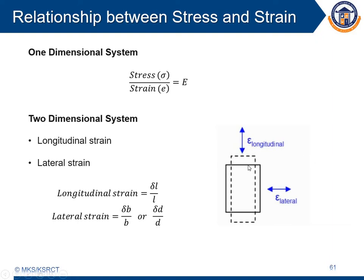Let us assume a rectangular component in which we are going to apply a tensile load, that is the pulling load. Because of the pulling, its cross-section will be reduced, meanwhile its length will be increased. The change in length to the original length gives the longitudinal strain. Meanwhile, the diameter — in case of a rod — or the height and width in case of a rectangular section will be reduced. That reduction, the change in diameter or change in width divided by the original diameter or width, is termed as lateral strain.